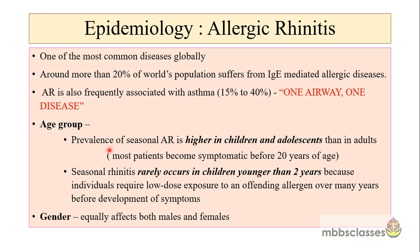If you see the age group, the prevalence of seasonal allergic rhinitis is higher in children and adolescents than in adults. This seasonal rhinitis rarely occurs in children younger than two years of age because the individual needs low dose exposure to the allergens over many years before the development of symptoms. The disease is affecting children and adolescents and studies have found that allergic rhinitis is causing problems like learning impairment and inability to integrate with peer groups. Regarding gender distribution, this disease affects males and females equally.